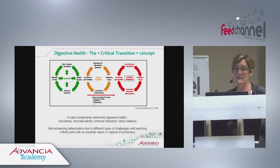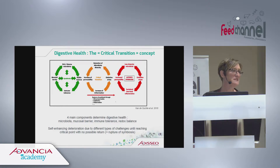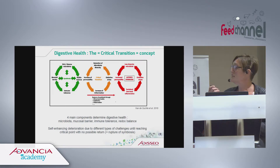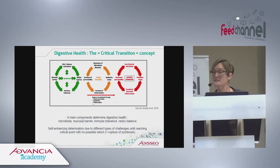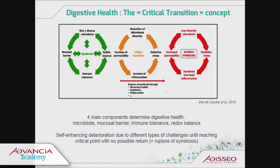However, when the animal or host encounters challenges or stresses — from environmental changes, nutritional challenge, or other kinds of stress — this symbiosis can be disrupted. You reach a critical transition stage where microbiota diversity starts to be reduced, intestinal permeability of the mucosal barrier increases, inflammation increases, and oxidative stress increases.